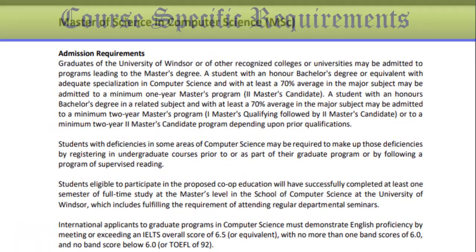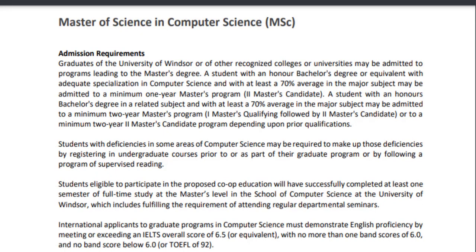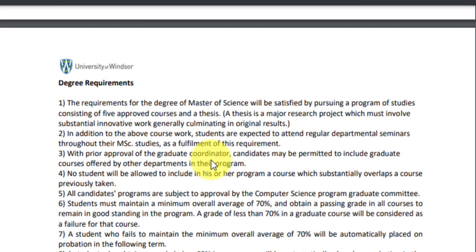Talking about the course-specific admission requirements: there are two tracks. If you are from a computer science background with at least 70% in major subjects, you are admitted to a one-year master's program — three terms. For people who don't have a specialization in computer science but are closely related to these subjects, you will be in a two-year master's program, studying six terms. To complete this degree, you need to complete five approved courses and write a thesis. You are also expected to attend regular departmental seminars.